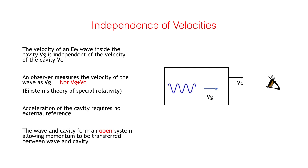Einstein's theory of special relativity tells us that the speed of light C is constant. It follows that if an electromagnetic wave is traveling inside a cavity with velocity Vg, no matter what the velocity of the cavity is Vc, an external observer will still measure the wave velocity as Vg, not Vg plus Vc. Vg is therefore independent of Vc. Note also that any acceleration of the cavity is independent of an external reference.